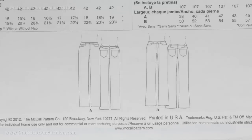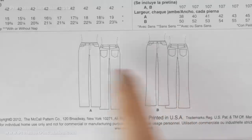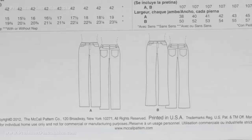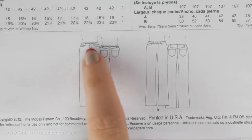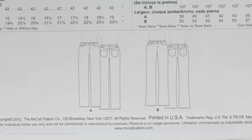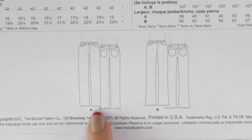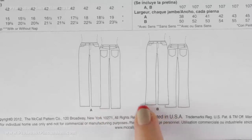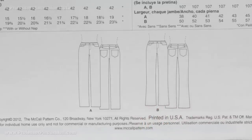Now let's focus on the information you can find on the back of the pattern envelope. Different pattern companies are going to set up things differently, but they all have some similarities. One thing I really like is they usually list a line drawing, and it's nice to see the detailed drawing because this shows you a little bit more detail of your garment — maybe a fly zipper, pockets in the front, pockets in the back, belt loops, that kind of thing. They also break down the different views: view A which has slim fitting legs and view B which has more of a flared boot cut type of bottom.